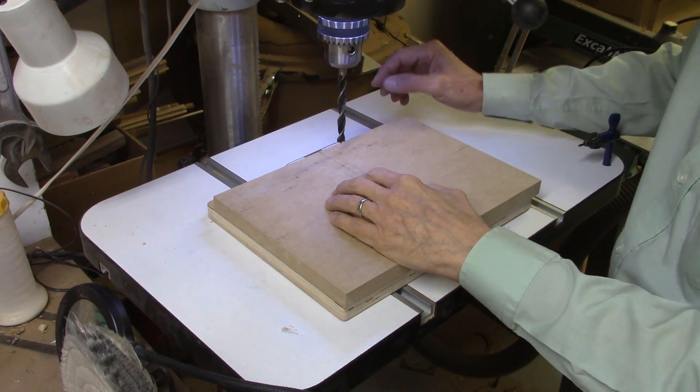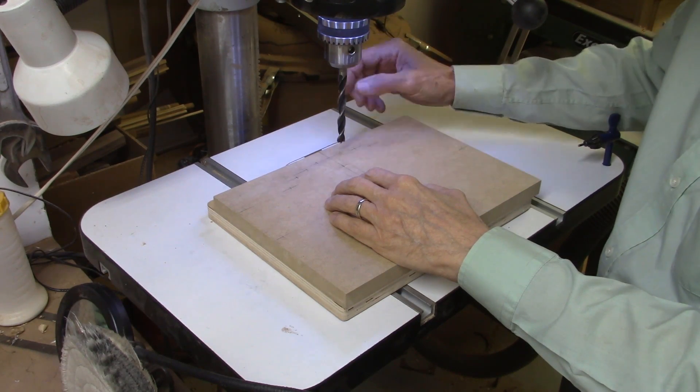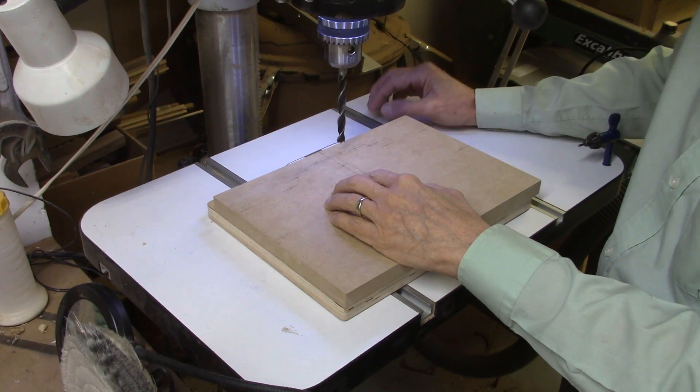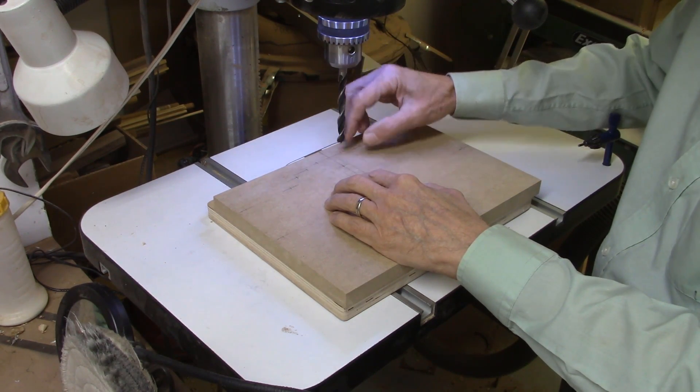For drilling all these holes for the screw inserts, I am using a twenty-five sixty-fourth inch drill bit. Sometimes I recommend a three-eighth inch drill bit, but if you use a three-eighth inch drill bit and you put the screw inserts in, often you will get mushrooming of the hole.